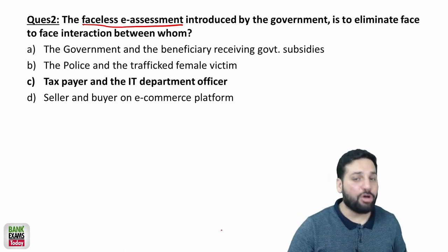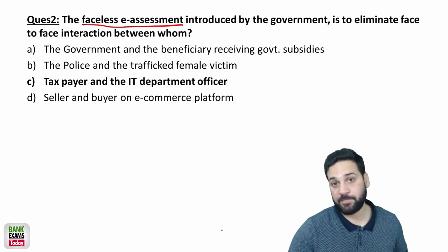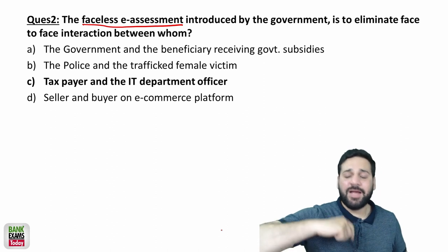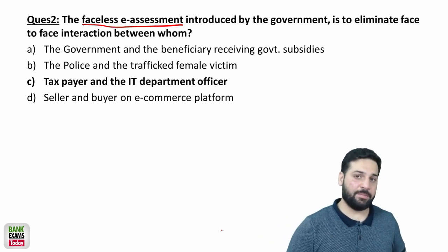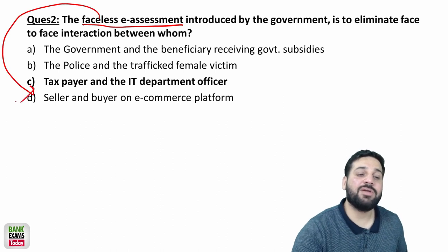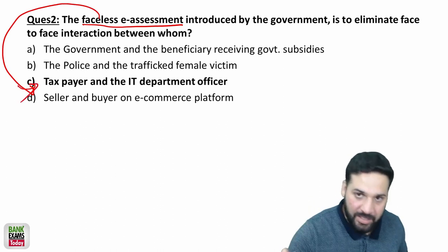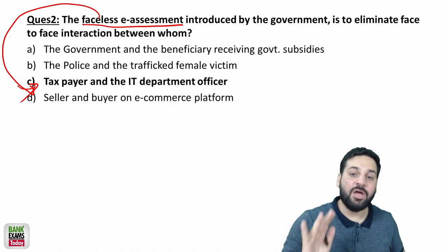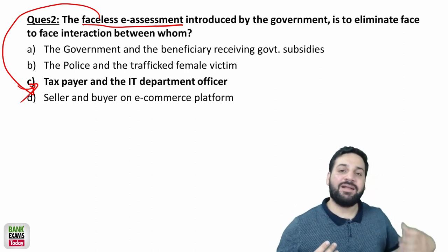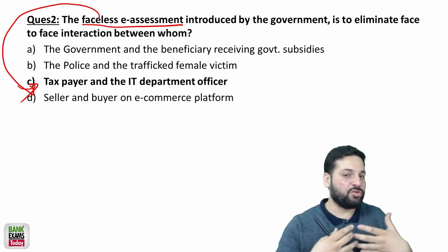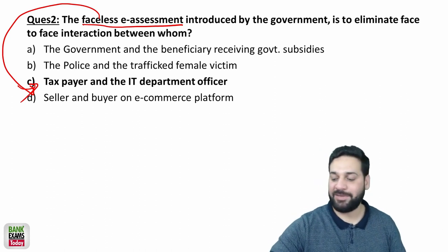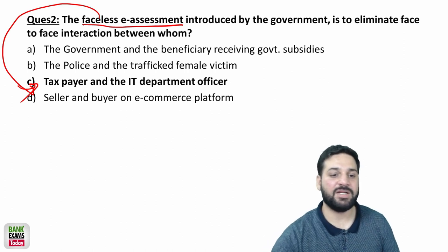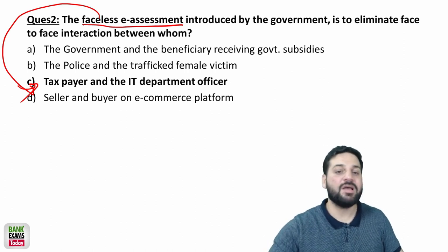If the assessment officer is satisfied with your answers, he'll give the assessment order according to your answers — so he gets a lot of authority. In many cases, there have been instances of bribery, as the taxpayer is facing the income tax officer. To avoid such situations, the faceless e-assessment system was introduced. The income tax department will ask you questions via email and you need to answer on email itself, so there is no direct interaction between the taxpayer and the IT department — human interference is eliminated. The correct answer relates to taxpayer and IT department interaction.